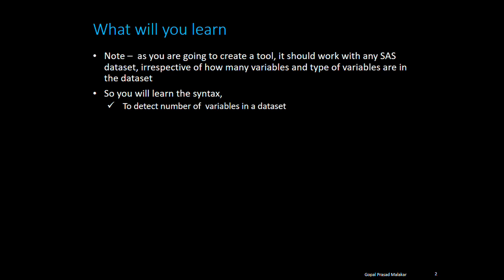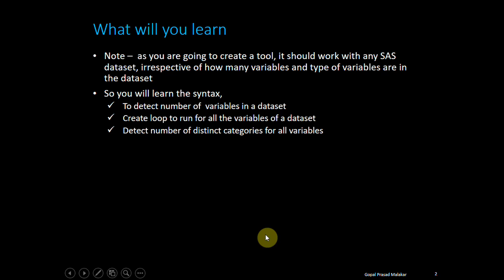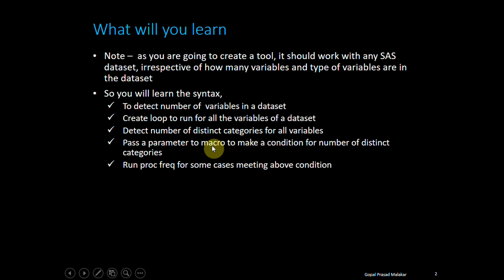You will learn how to programmatically detect the number of variables in a dataset and create a loop so that it can run for all variables of the dataset. Then detect the number of distinct categories through the program, and then run frequency distribution if the number of distinct categories is less than a particular threshold. So you're going to learn how to pass a parameter and how to run frequency distribution for only those conditions which are meeting the above criteria.